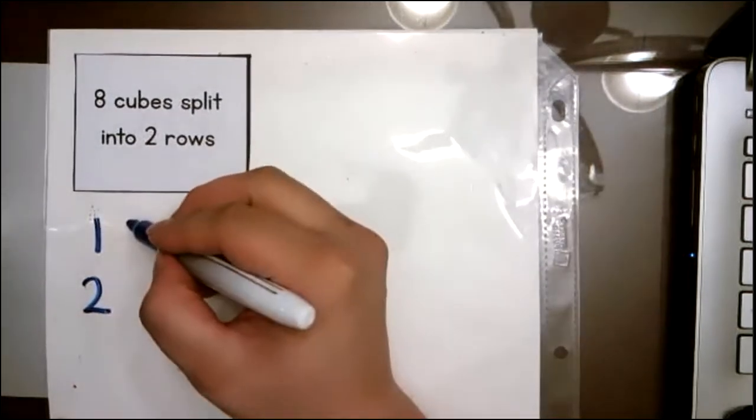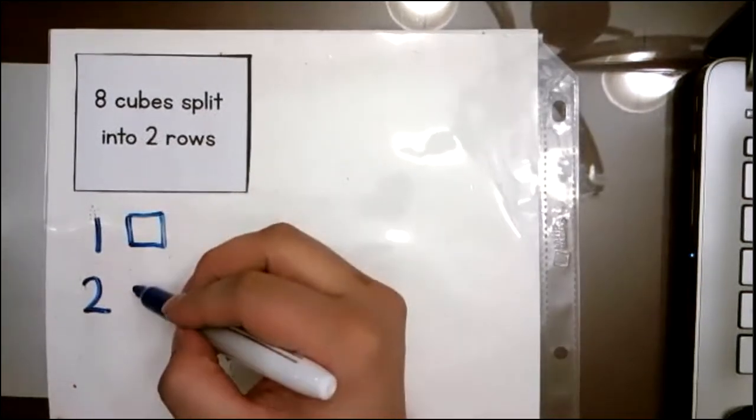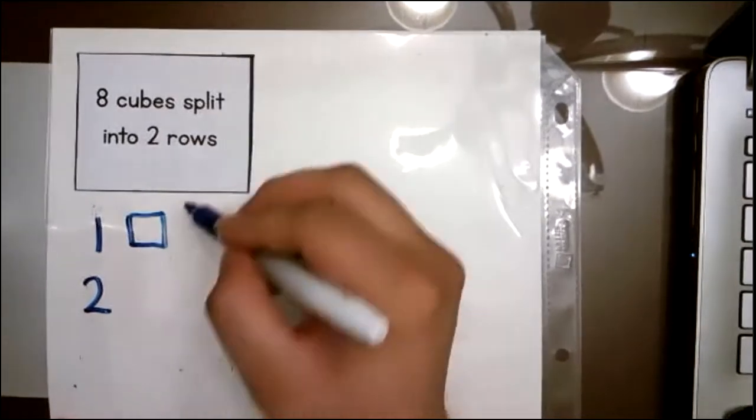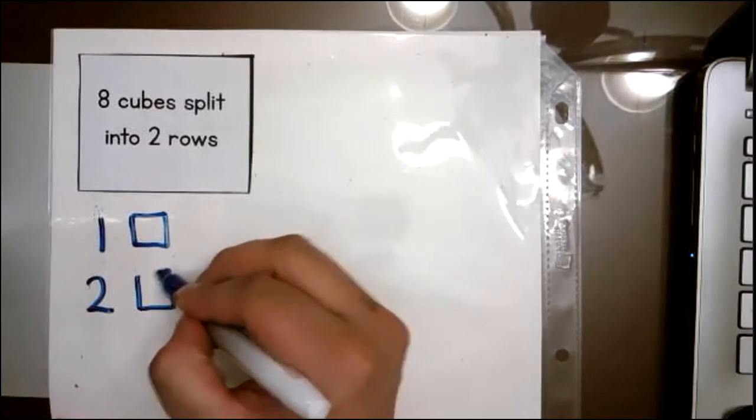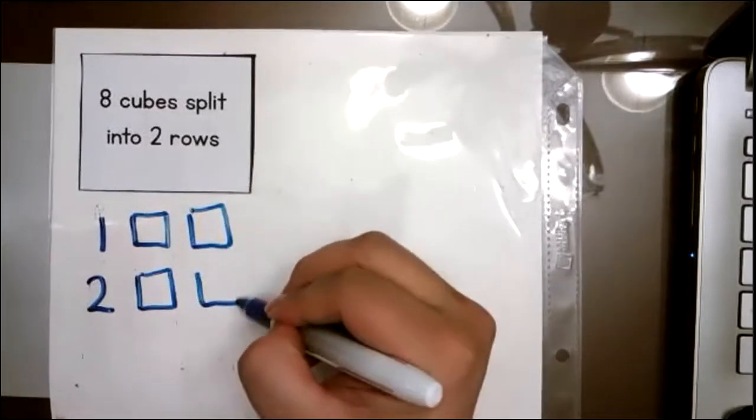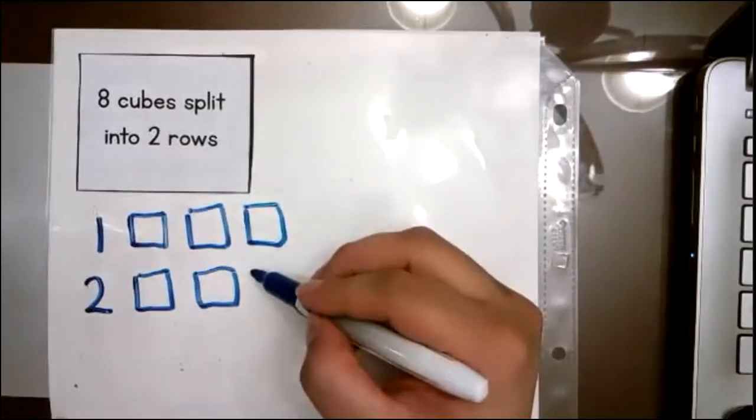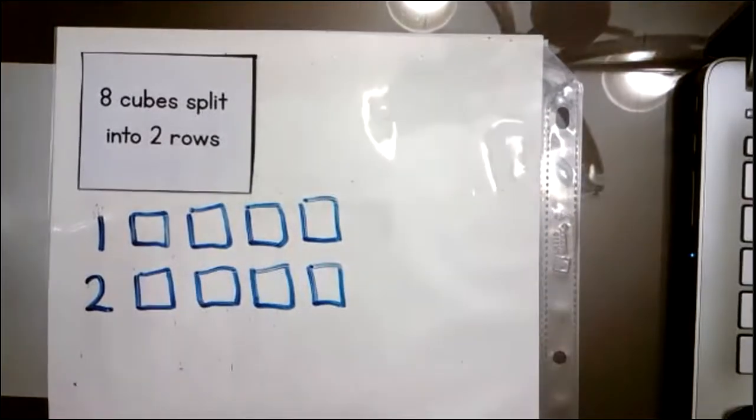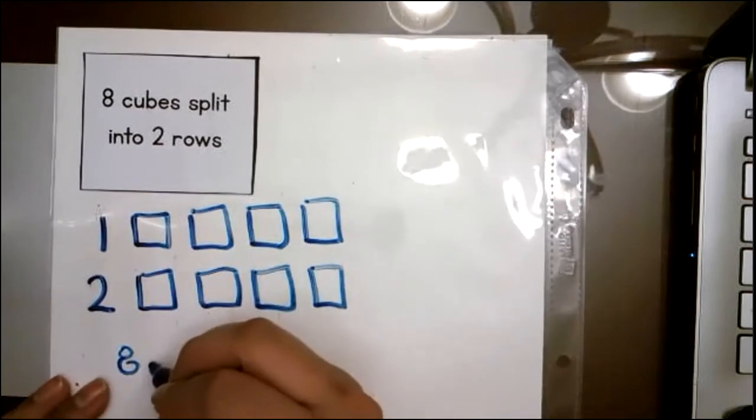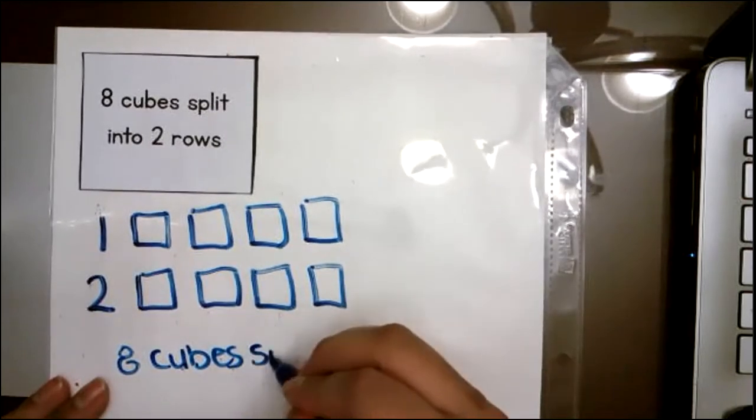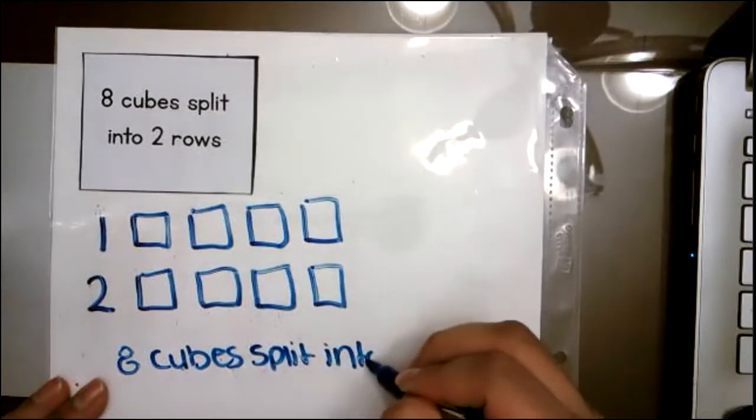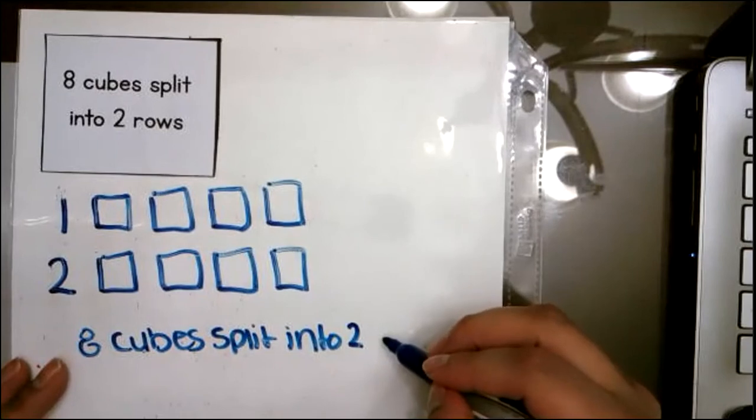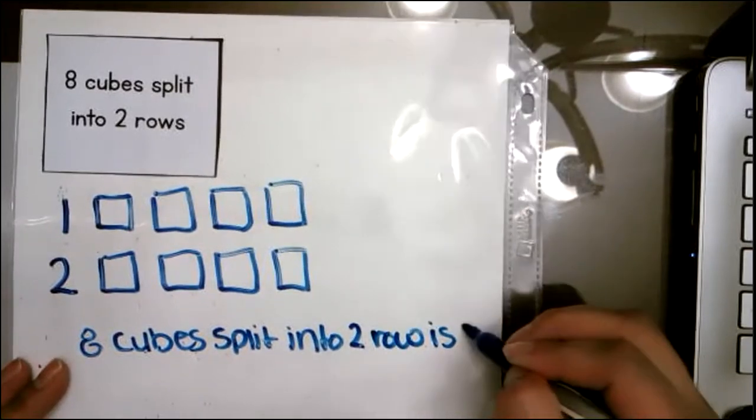Now we have eight cubes in total that need to be split into two rows. So what I'm going to do is I am going to put one here and continue the pattern going back and forth. So one, two, three, four, five, six, seven, and eight. How many do I have in each row? Four, right. So eight cubes split into two rows is four.